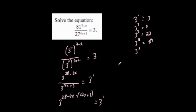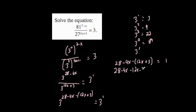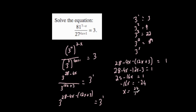So we get 3 to the power of (28 minus 4x) minus (12x plus 3) equals 3 to the 1. Equating the powers: 28 minus 4x minus 12x minus 3 equals 1. Simplifying: 25 minus 16x equals 1. Subtracting 25: minus 16x equals minus 24. Dividing: x equals 24 over 16, which cancels to 3 over 2.